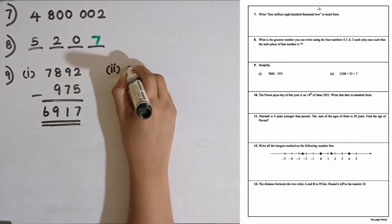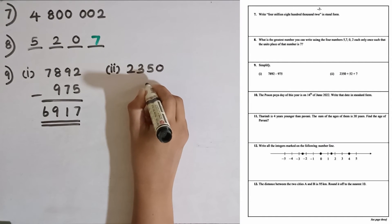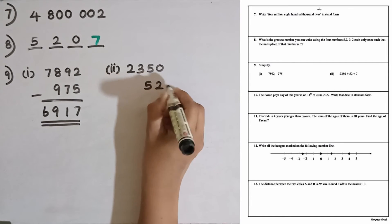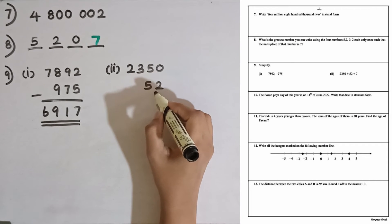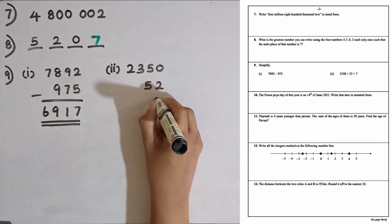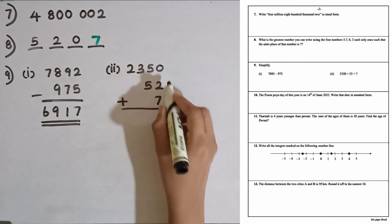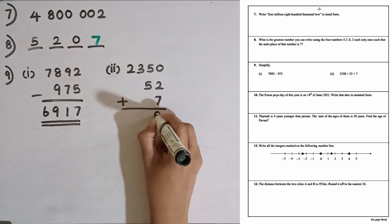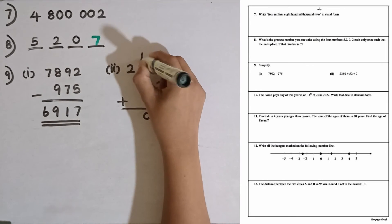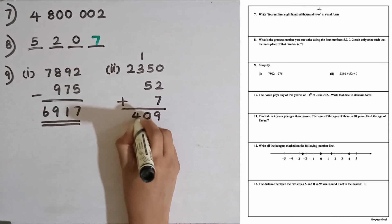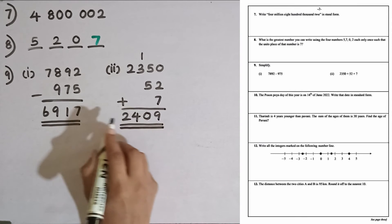The second part is an addition: 2,350 plus 52. Write place values one below the other. 7 plus 2 is 9, then 5 plus 5 is 10 — carry 1 to the other side — giving 3, and 2 comes here. The answer is 2,409.